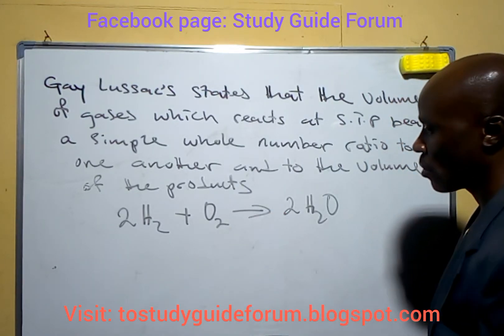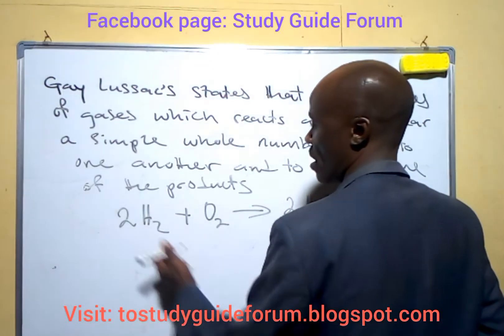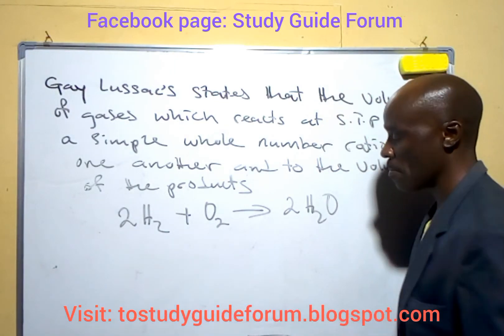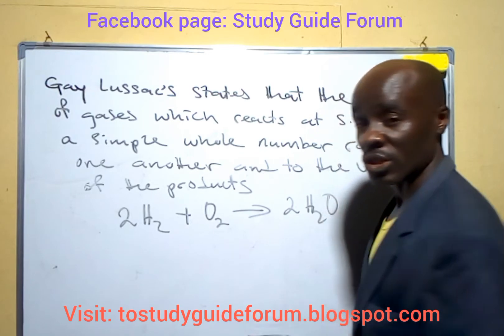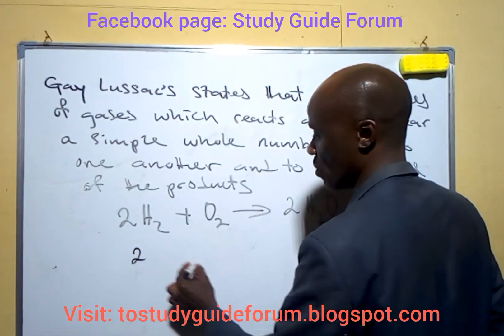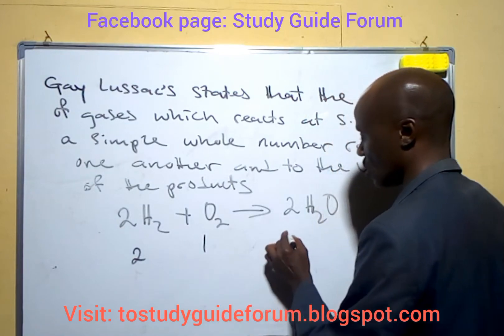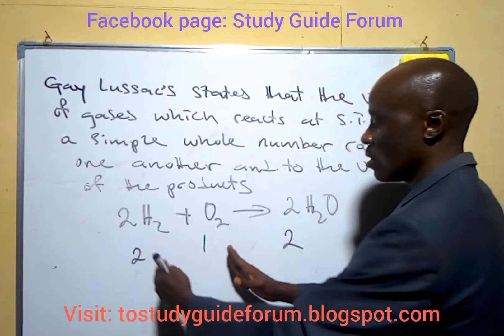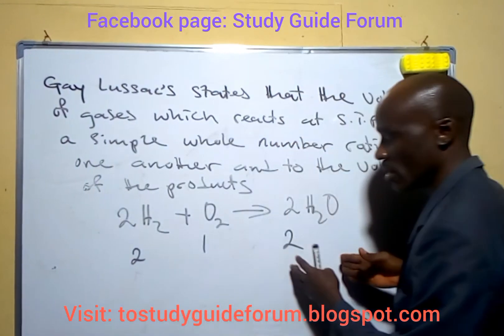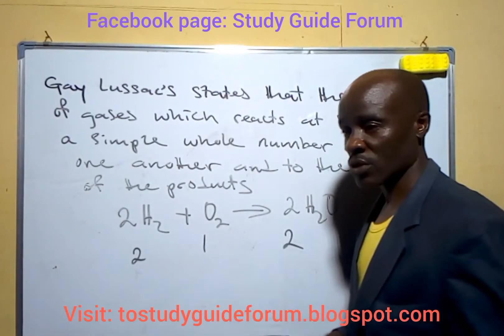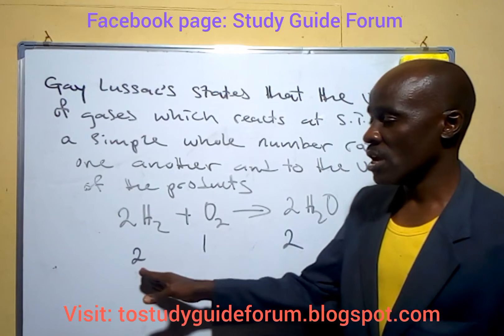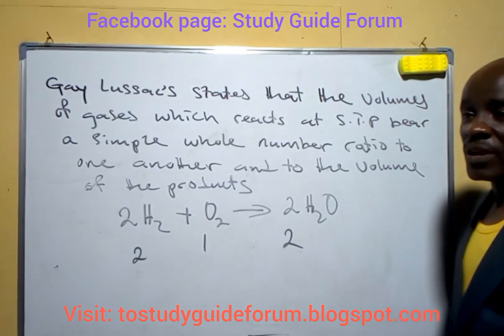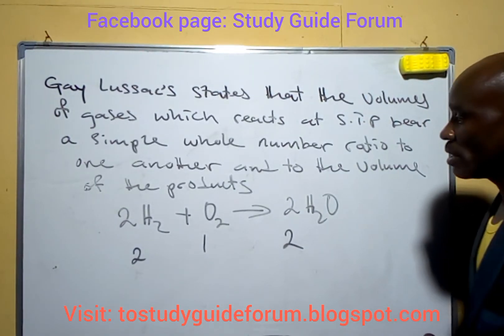What we have here is a combination of hydrogen and oxygen to give us water. The simple ratio being discussed is what we see here: we have 2, 1, and 2. This ratio doesn't have to be equal — that is to say, adding them doesn't necessarily give you the product — but it is clear that there must be a ratio relationship that exists in every gas reaction at STP.